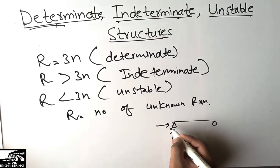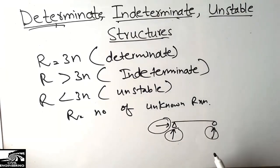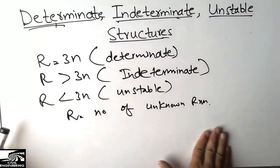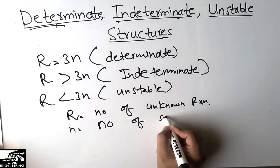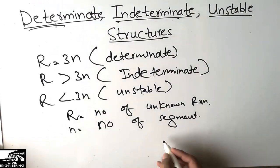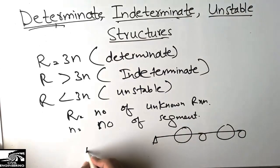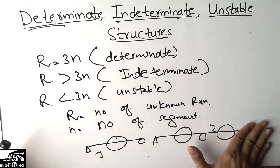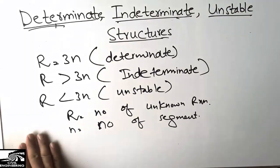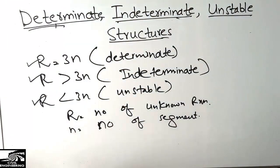The variable n is the number of segments — that is, how many segments make up the structure. For example, in a single beam there is one segment, so n = 1. In a composite beam made of two beams, n = 2. The value 3 is a constant. These three formulas allow us to identify whether a structure is determinate, indeterminate, or unstable.